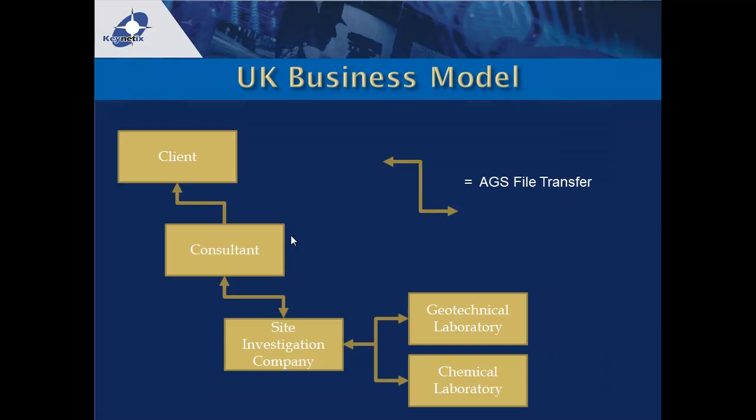Coming back to the UK business model, the AGS file fits as follows: the client, consultant, site investigation company, geotechnical laboratory, and chemical laboratory all communicate using AGS data. The consultant gives data to the client; the consultant and site investigation talk using AGS data for specifications or requests; the site investigation company sends laboratory schedules to the labs; and labs send results back in AGS format. It's really the kingpin for moving data around within that UK business model.